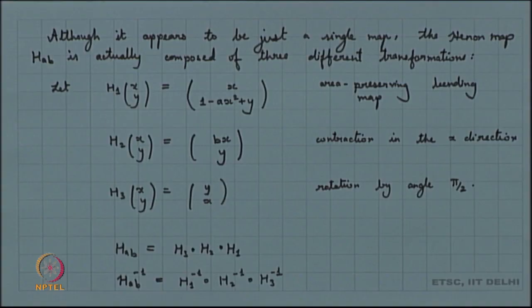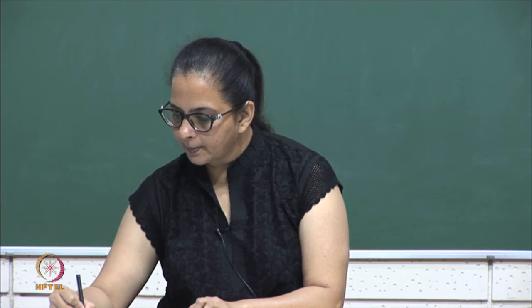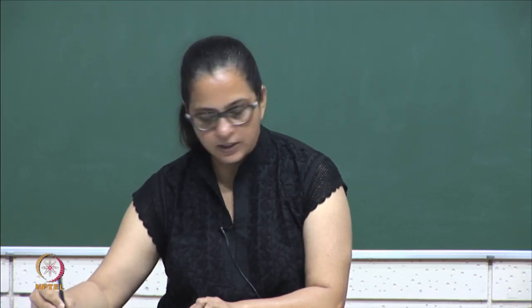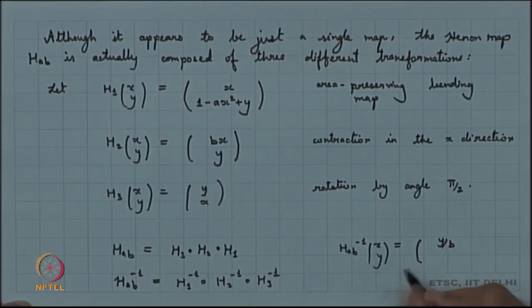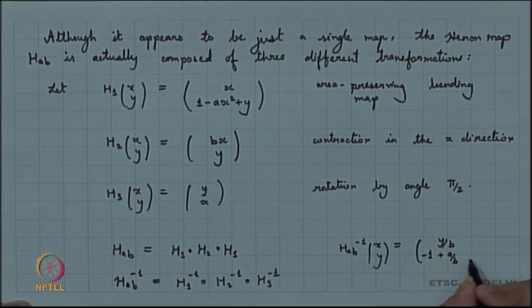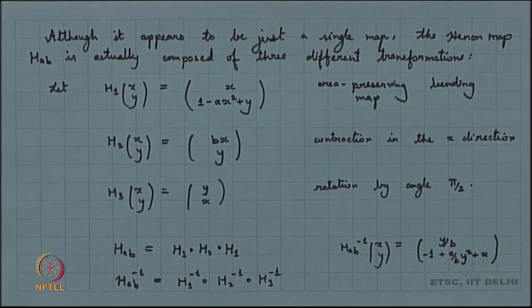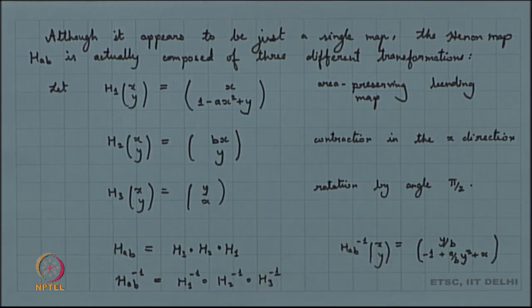Let us see how we can geometrically interpret the Hennon map and what the inverse looks like. We can write H_{a,b}⁻¹(x, y) = (y/b, -1 + (a/b²)·y² + x). This is also some kind of a Hennon-type map where since |b| < 1, we get some kind of expansion in the structure.